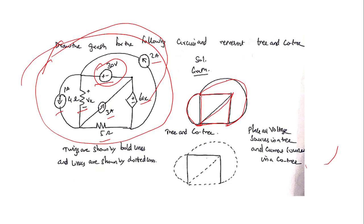The circuit has a number of branches. A branch is a two-terminal element. We have a 30 volt source — two-terminal element; 2 ampere source — two-terminal element; 6Vx — two-terminal element; 3 ampere source — two-terminal element; 5 ohm — two-terminal element; 4 ohm — two-terminal element; and 1 ampere source — two-terminal element. All elements in the circuit are two-terminal, and each two-terminal element is represented as a line segment to draw the graph.